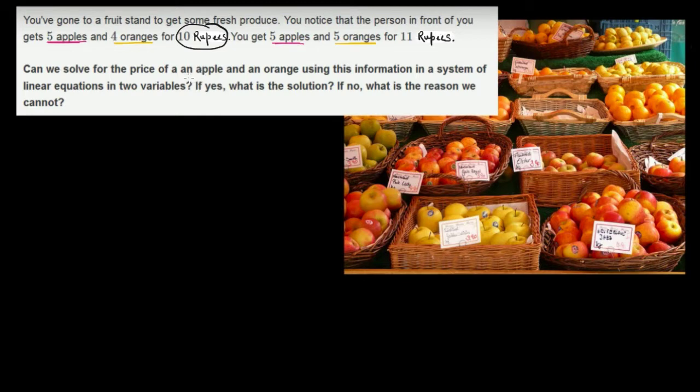First, we identify the unknowns and define our variables. Let the price of one apple be x rupees and the price of one orange be y rupees.